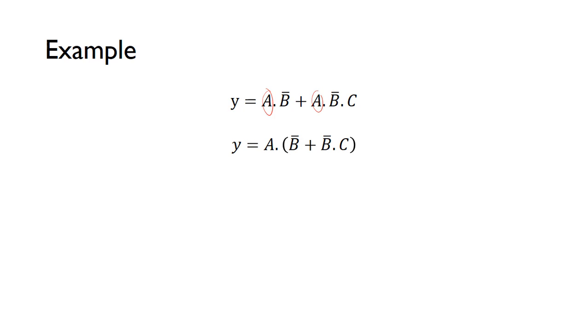Again, by looking inside the brackets, we can note that not B is also a common factor here. So we can take out the not B, and then we're left with this. Inside the square brackets we've got 1 or C. We know from the laws that 1 or C will just give us 1, so we're left with this expression.